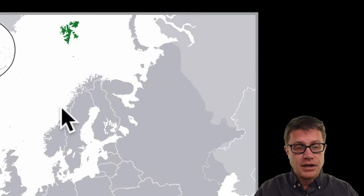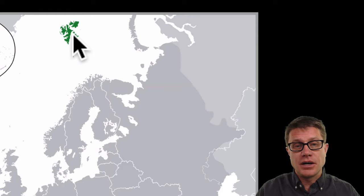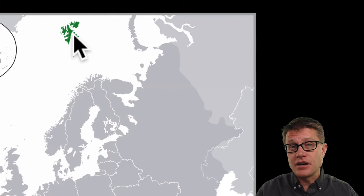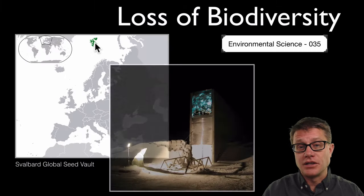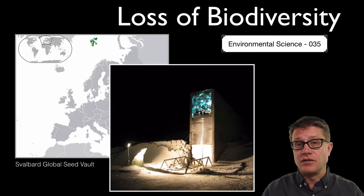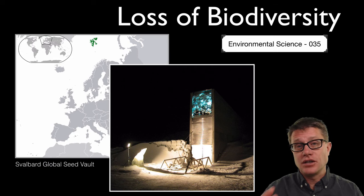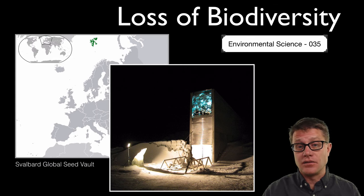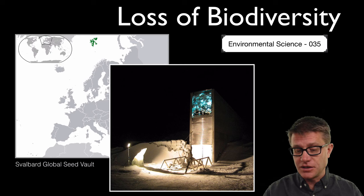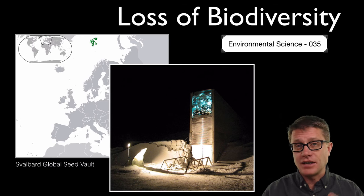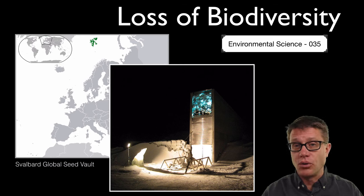Way up in northern Norway is the Svalbard Peninsula. On there scientists built a giant seed vault. It is protecting the seeds of humanity — our crop seeds — into the future. They chose to put it there because it is protected against tectonic activities and it is really, really cold.